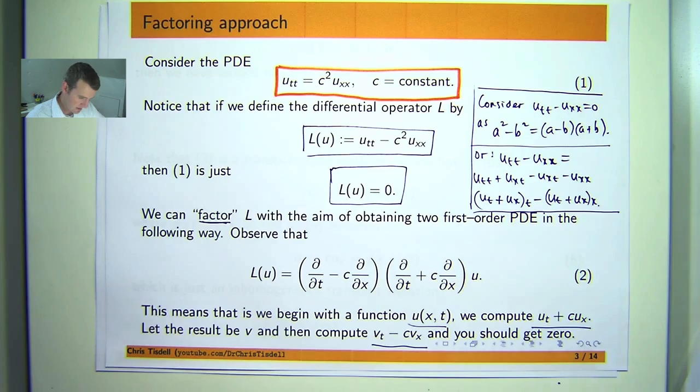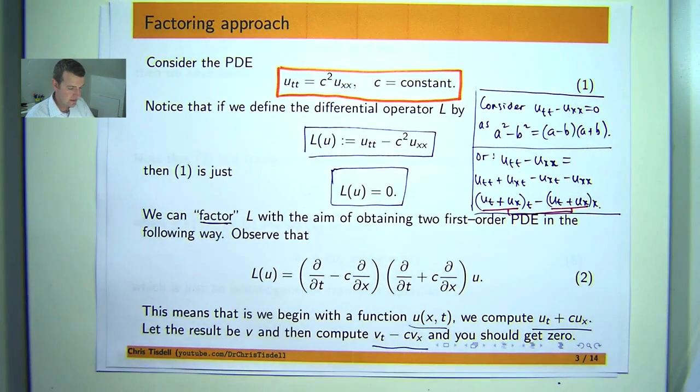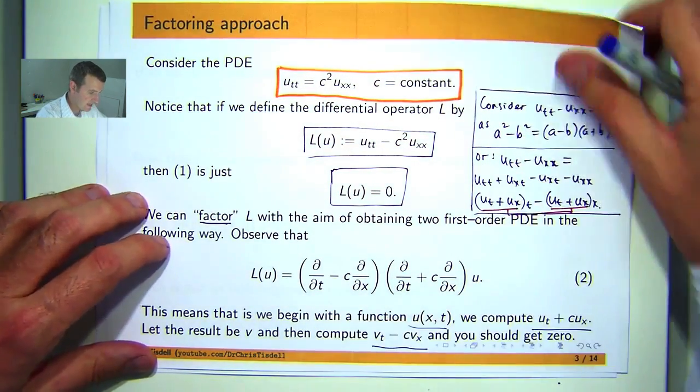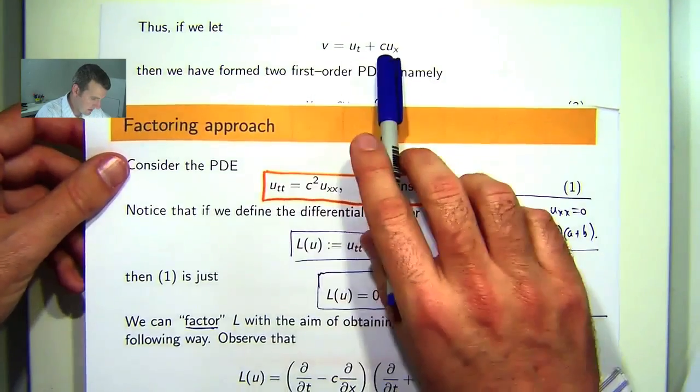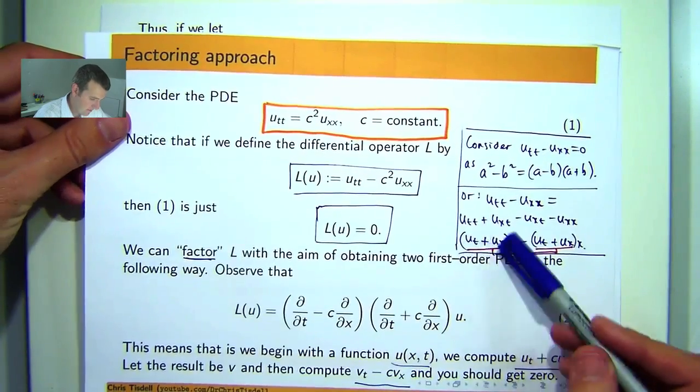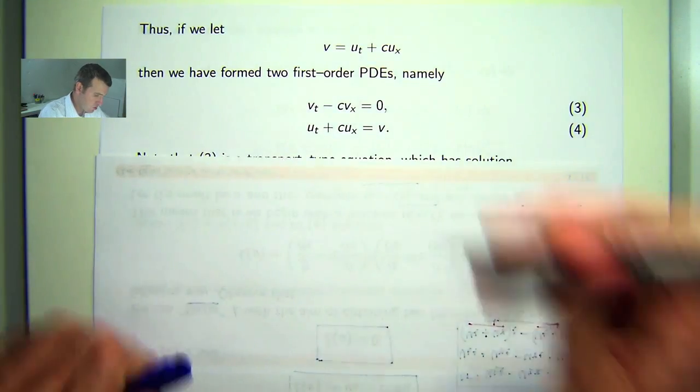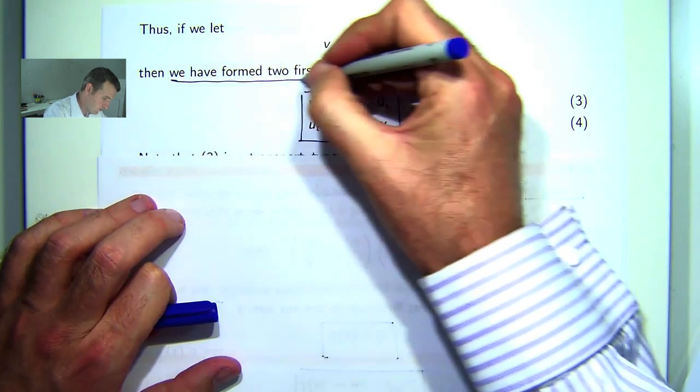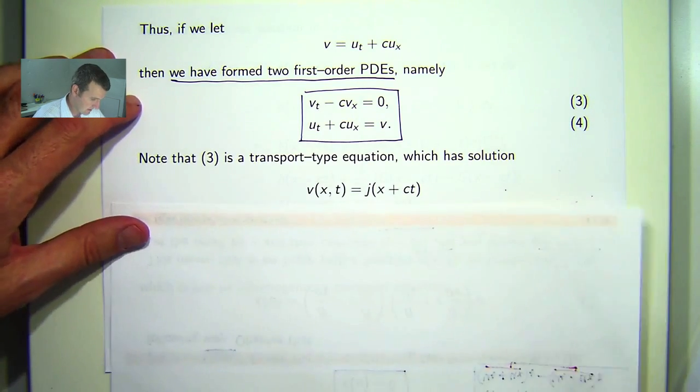This and this are the same and that's important. So if I make these factorizations, if I let v equal ut plus c·ux, so in this case you have that v in that bracket with c equals one, v in that bracket c equals one, then you'll get two first order problems which we know how to solve from earlier lessons.